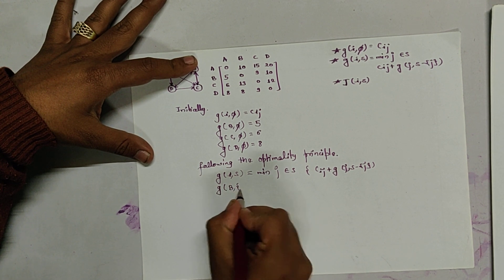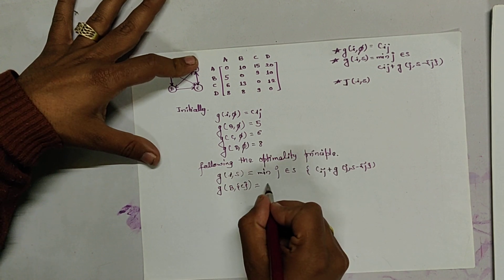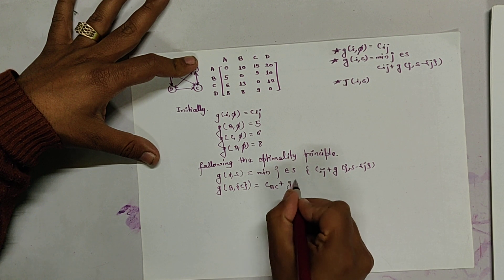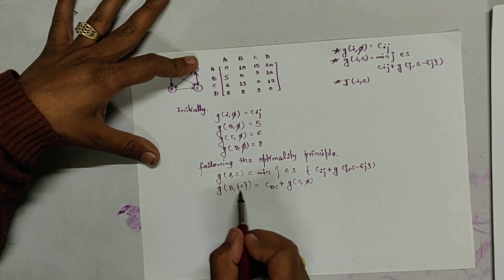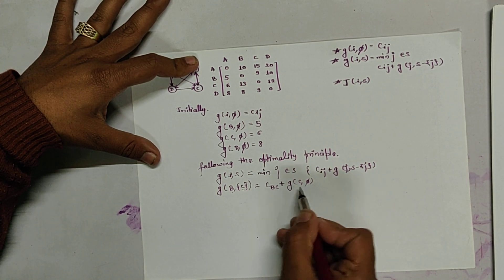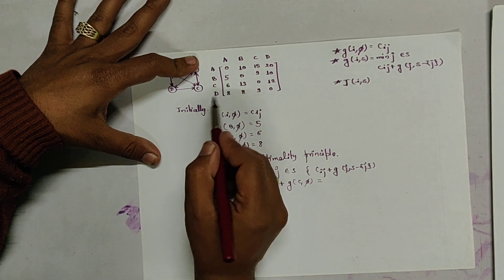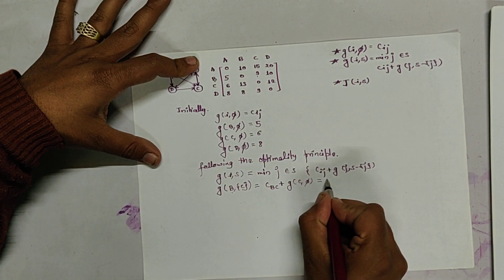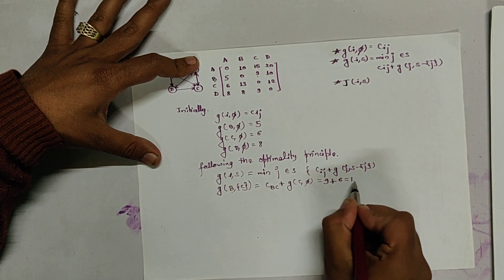Let us compute G(B, {C}): choose S equals C. It is expressed as C(B, C) plus G(C, ∅). The distance from B to C is 9, plus G(C, ∅) which is 6, so it equals 15.